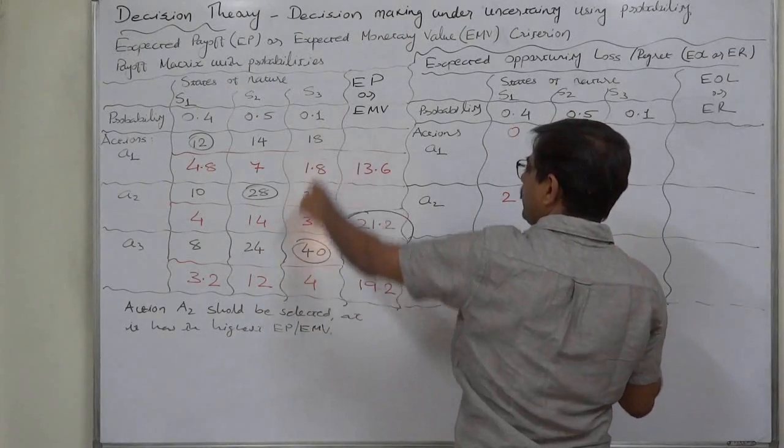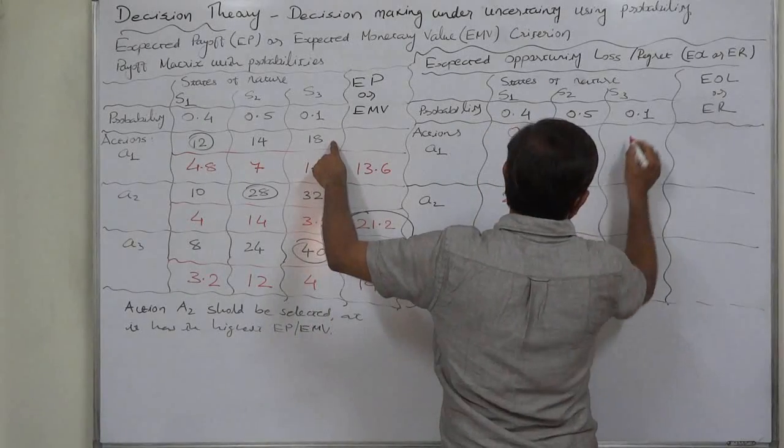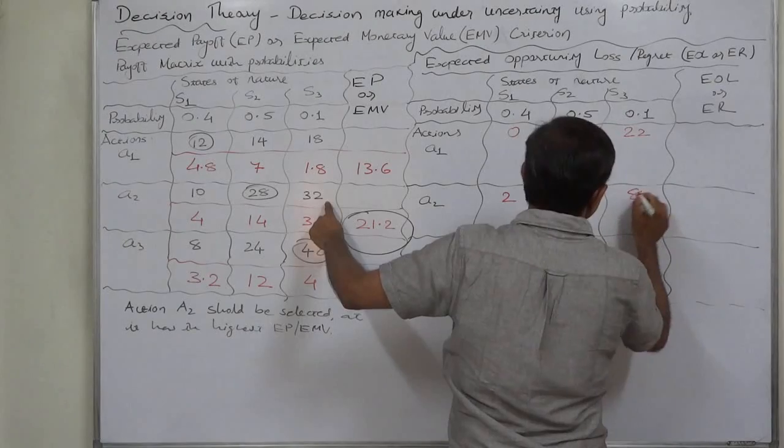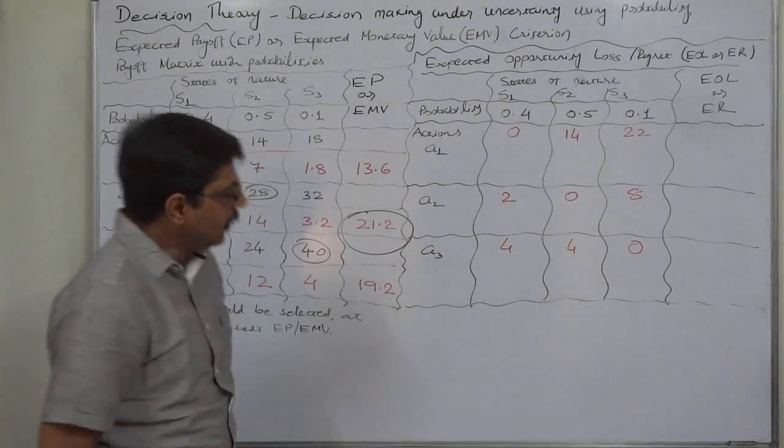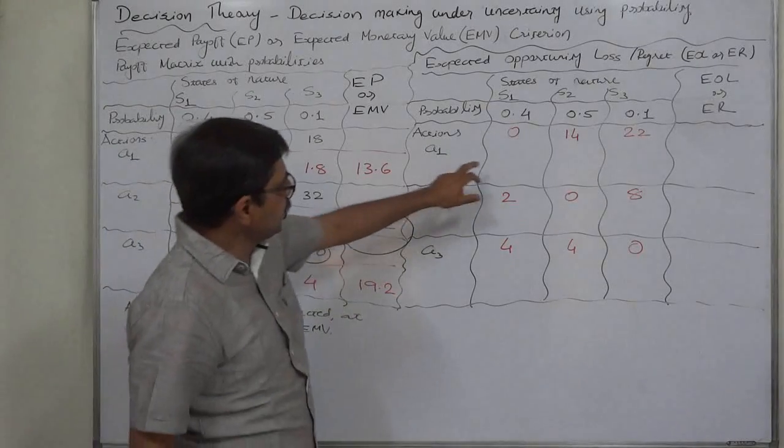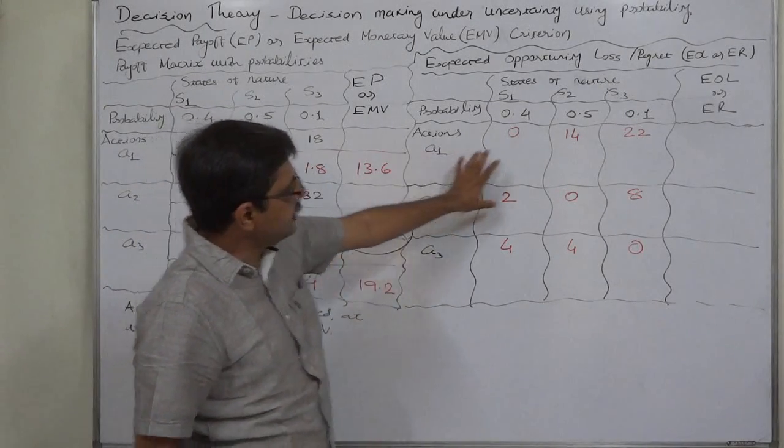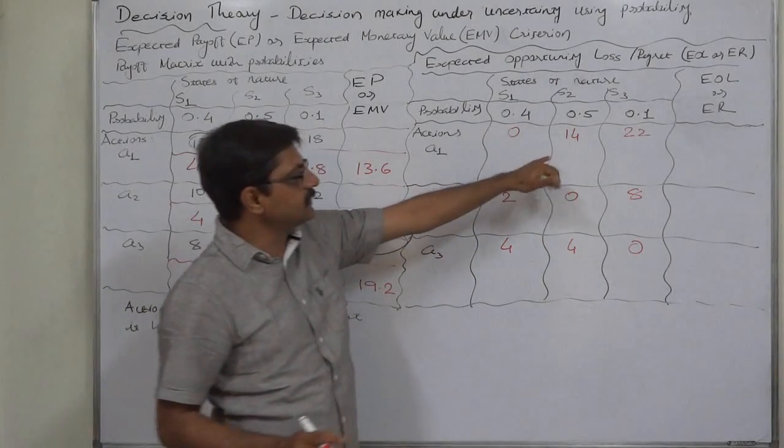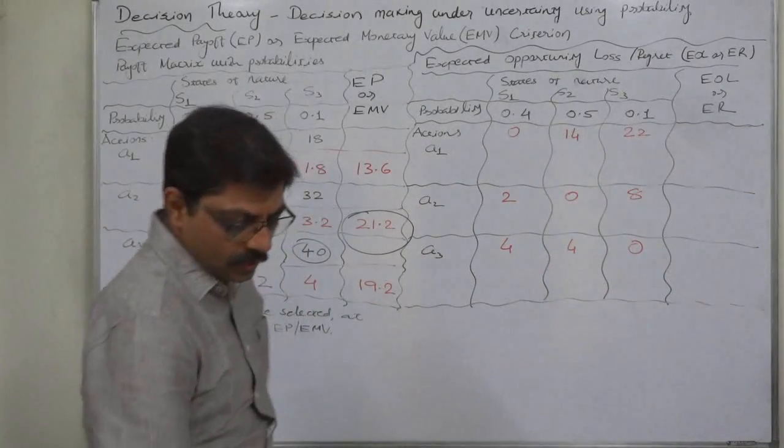Now all these opportunity losses of all the alternatives can be treated as x, and as we know that x into p of x will give us the expected value. Let's find out the expected values of all these opportunity losses.